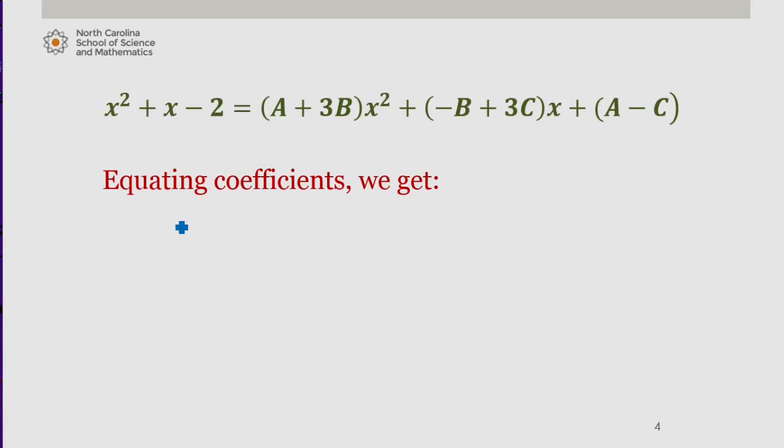So equating coefficients we get one equation, which is A plus 3B is equal to the coefficient of 1. We see that negative B plus 3C is also equal to 1. And A minus C is equal to negative 2.